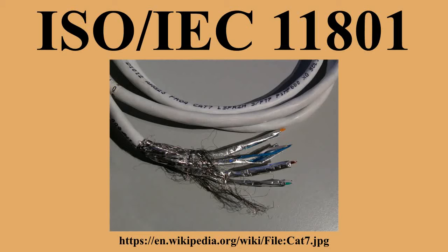Besides the shield, the twisting of the pairs and number of turns per unit length increases RF shielding and protects from cross-talk. The Category 7 cable standard has been created to allow 10 Gigabit Ethernet over 100 meters of copper cabling. The cable contains four twisted copper wire pairs. Category 7 cable can be terminated with 8P8C-compatible GG45 electrical connectors or with TERA connectors, and is rated for transmission frequencies of up to 600 MHz.